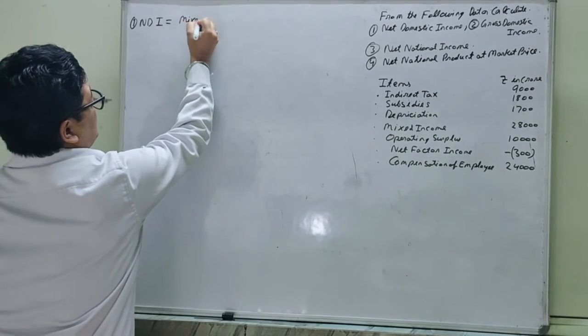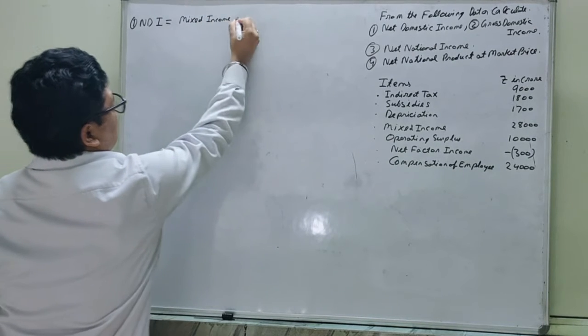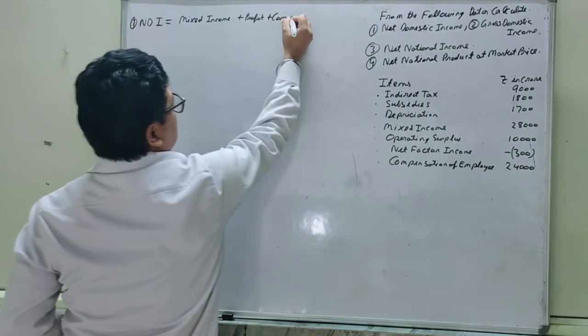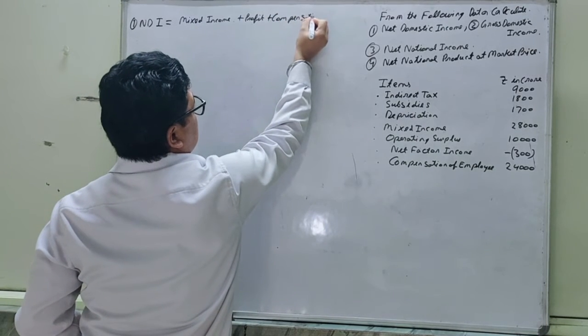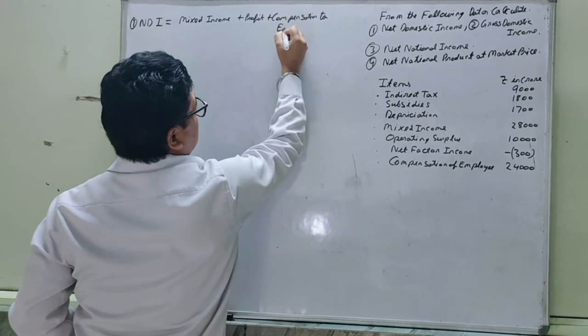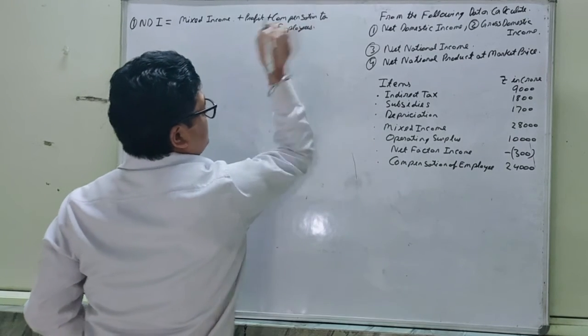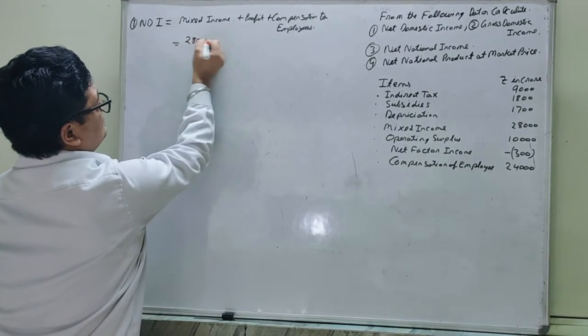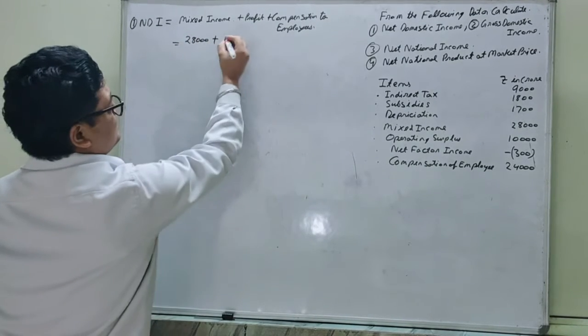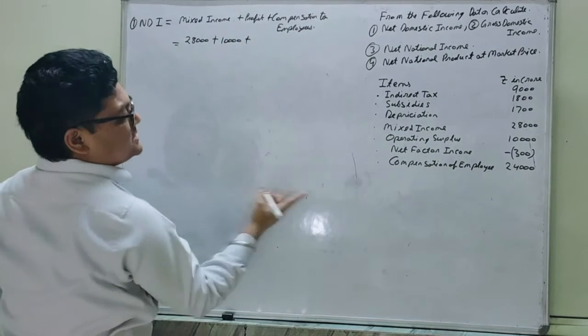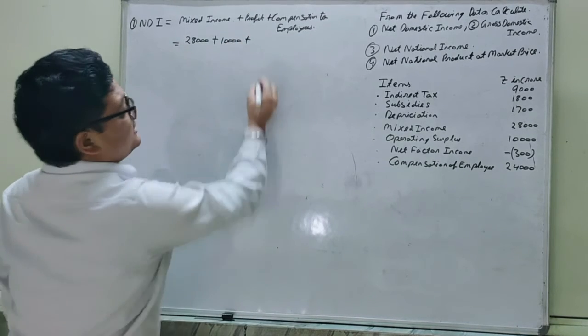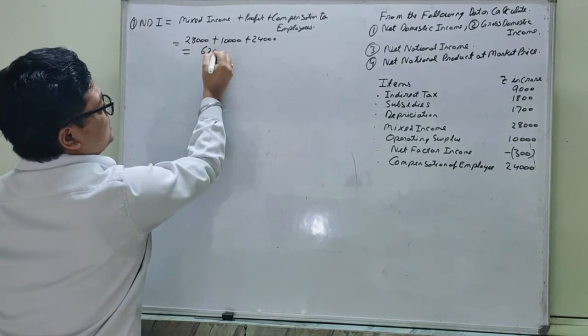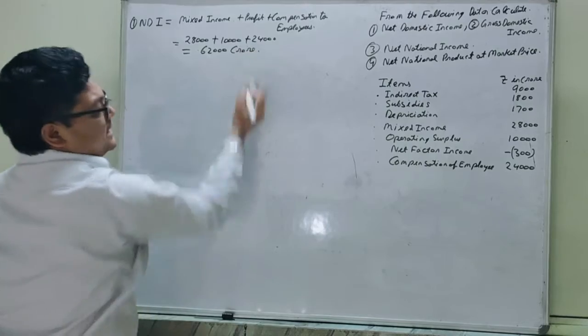So the formula is mixed income plus operating surplus plus compensation to employees. That is 28000 plus 10000 plus 24000, which equals 62,000 crore. All items are given in crore.